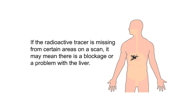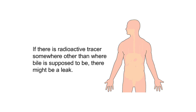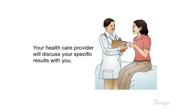If the radioactive tracer is missing from certain areas on a scan, it may mean there is a blockage or a problem with the liver. If the radioactive tracer is not seen in your gallbladder, you may have inflammation or swelling of the gallbladder. If there is radioactive tracer somewhere other than where bile is supposed to be, there might be a leak. Your health care provider will discuss your specific results with you.